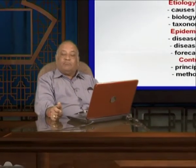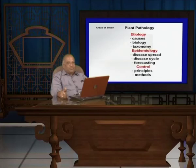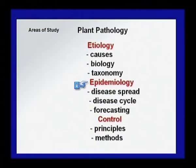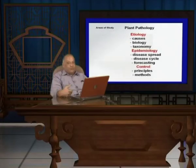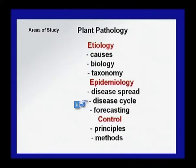Now I am discussing the areas of study in plant pathology. We study etiology, which means knowing the causes of the pathogens — the biology and taxonomy of the pathogen, to determine which class, group, or family the particular pathogen belongs to. Then epidemiology: how the disease is spread, and what physical factors like temperature, humidity, rainfall, and sunshine affect the development and perennation of the disease in the field. Then, very importantly, the disease cycle.